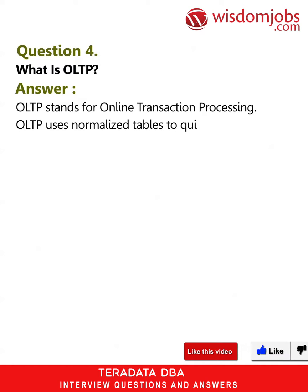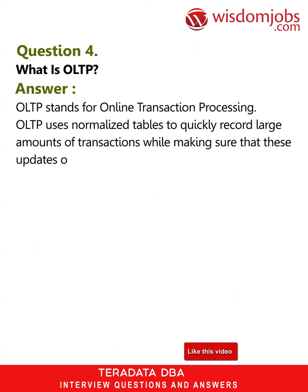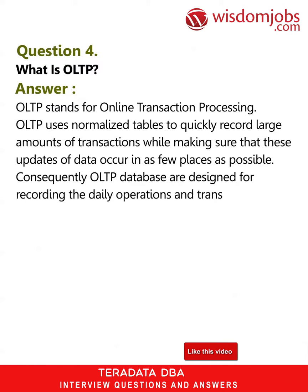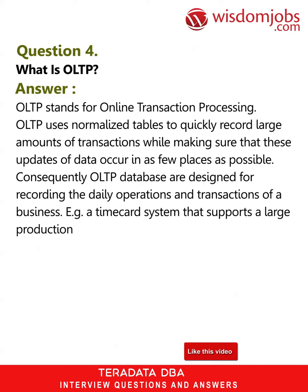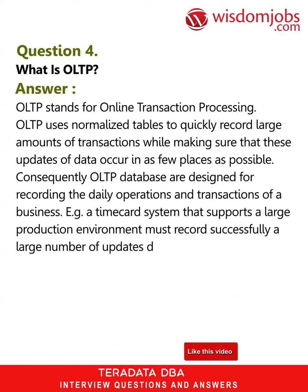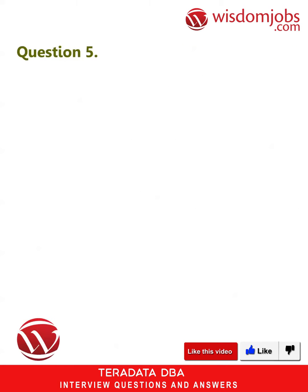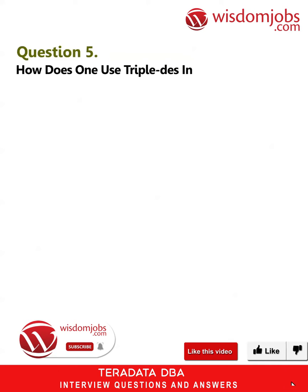Question 4: What is OLTP? Answer: OLTP stands for Online Transaction Processing. OLTP uses normalized tables to quickly record large amounts of transactions while making sure that data updates occur in as few places as possible. OLTP databases are designed for recording daily operations and transactions of a business — for example, a time card system supporting a large production environment that must record a large number of updates during critical periods like lunch hour, breaks, startup, and close of work.